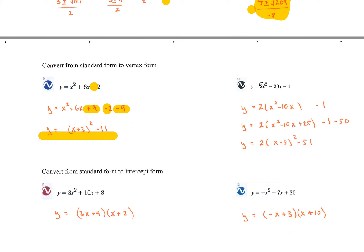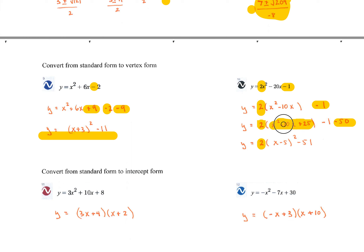The next one is more annoying because of the leading 2. Factor out 2 from 2x squared and negative 20x: that leaves x squared and negative 10x. The minus 1 constant is set off to the side. The magic number is 25. But remember, when you add 25 inside the parentheses, you're really adding 50 because of the factor of 2. So you must subtract 50 on the same side, not 25. This factors to 2 times x minus 5 squared, and the constant becomes negative 51. The vertex is at 5, negative 51 — shifted right and down.